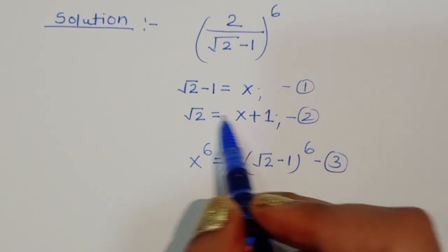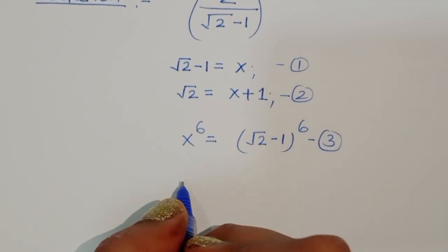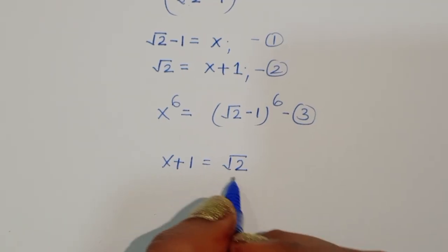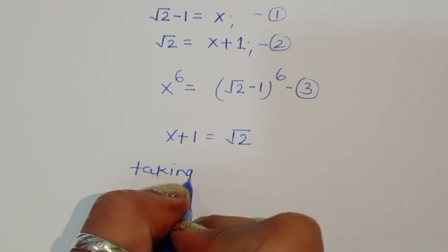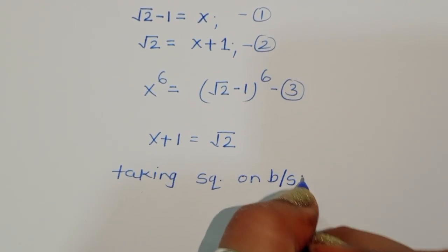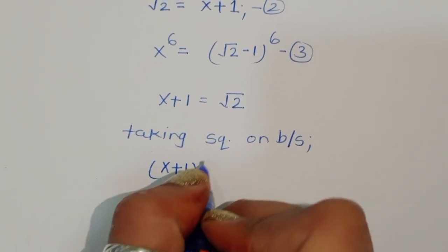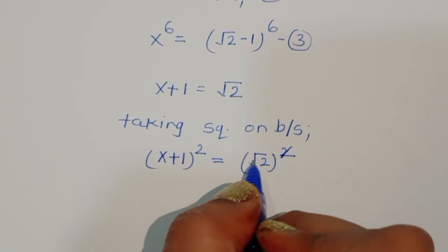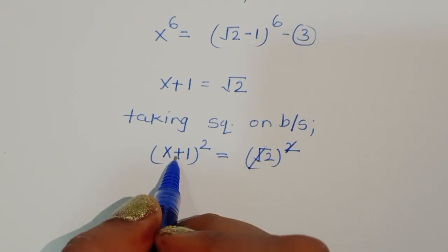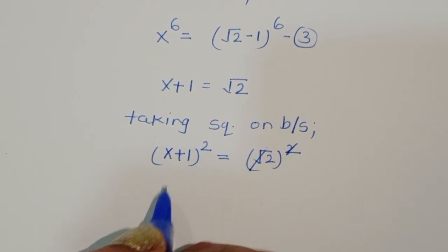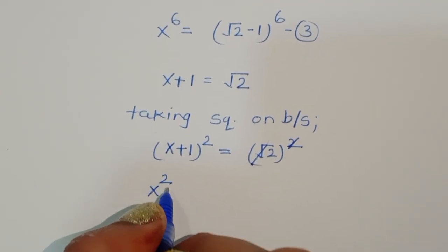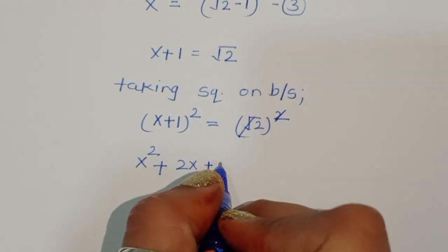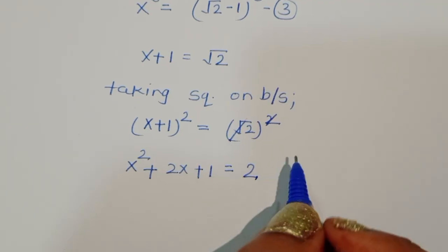Now x plus 1 is equal to square root of 2. Taking square on both sides, x plus 1 whole square is equal to square root of 2 whole square. Using the formula (a + b)² = a² + 2ab + b², we get x squared plus 2x plus 1.